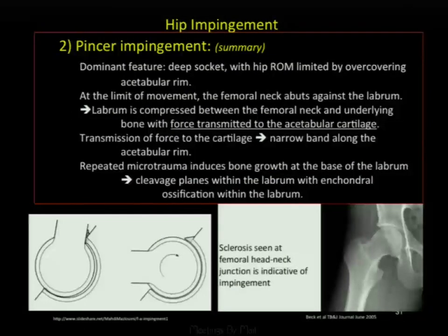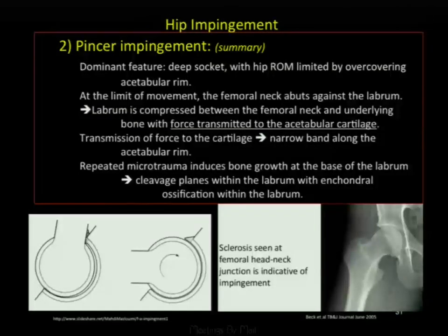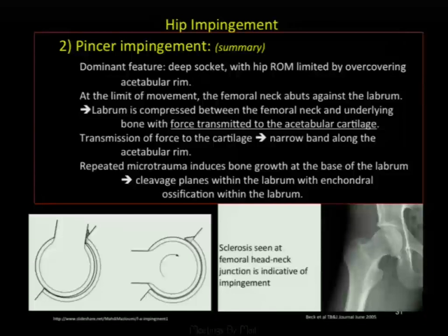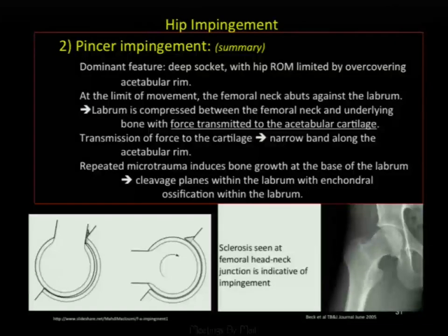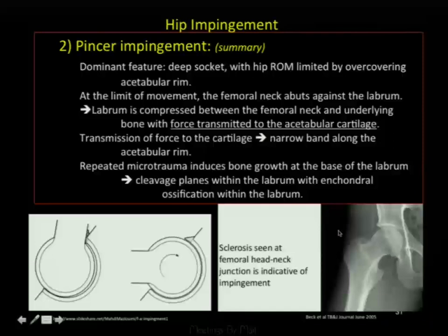In summary, the dominant feature is a deep socket with hip range of motion limited by an over-covering acetabular rim. At the limit of movement, the femoral head-neck abuts against the labrum, which is compressed between the femoral neck and underlying bone. Force is transmitted to the acetabular cartilage in a narrow band along the rim, and repeated microtrauma induces bone growth at the base of the labrum. In some cases, a sclerotic pit forms in the femoral head at the point of impaction.